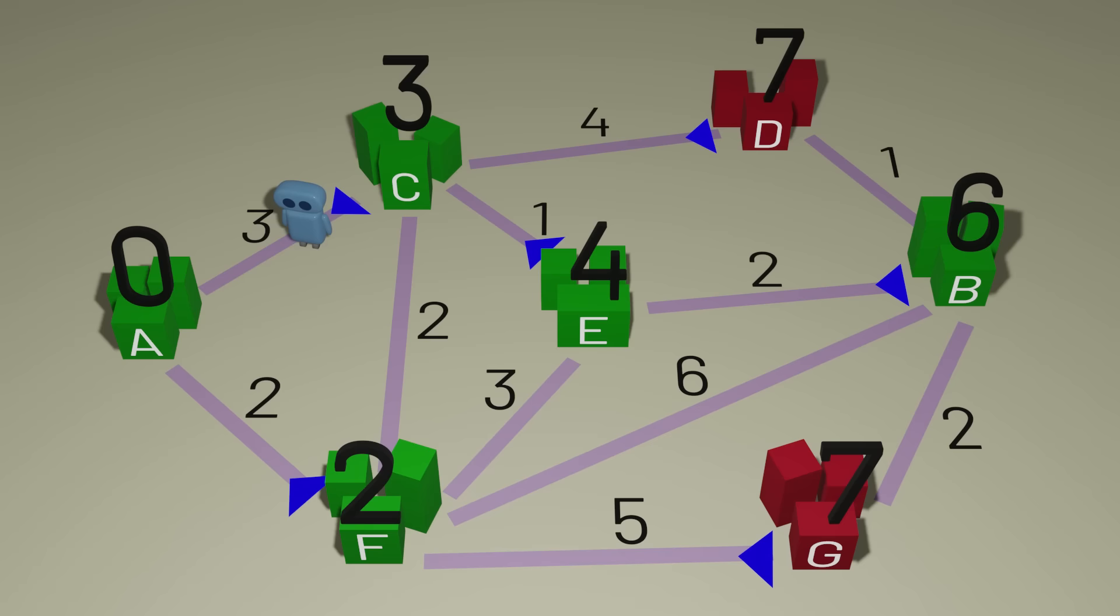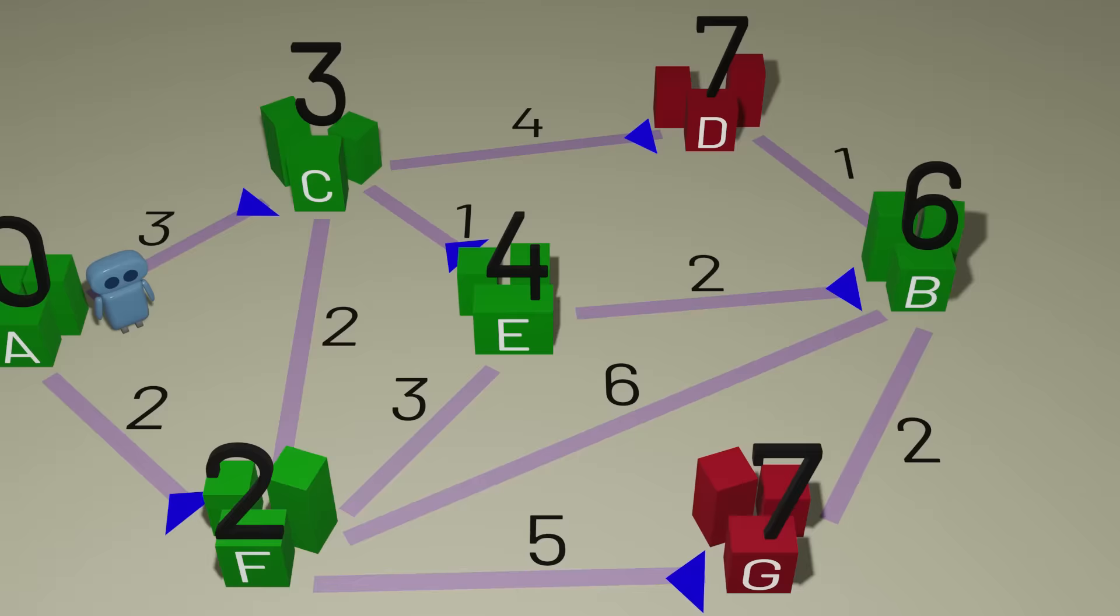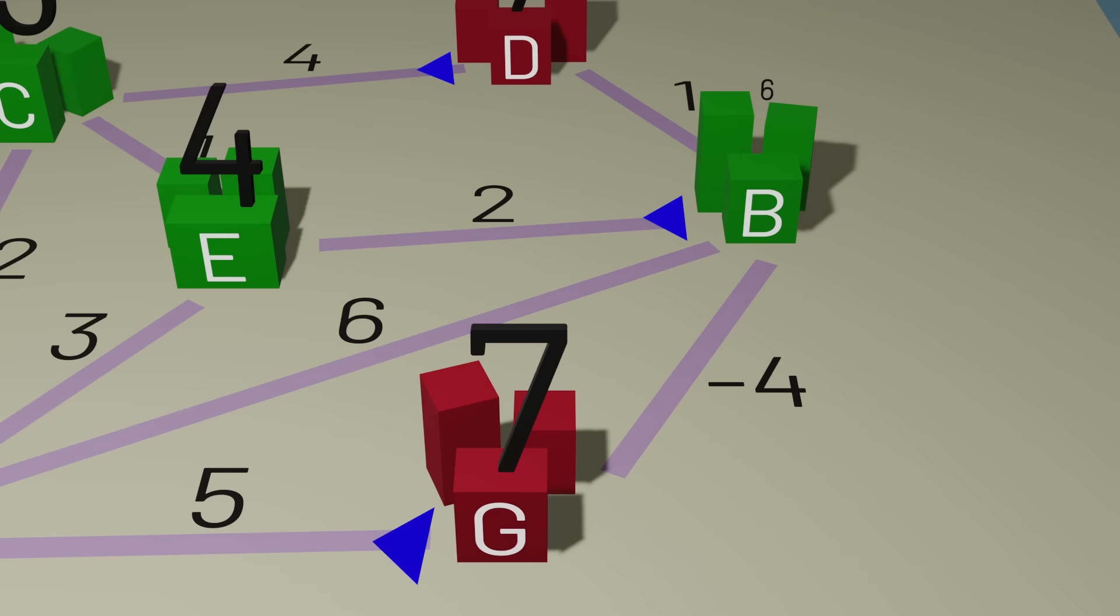Also, it's worth noting that this algorithm only works correctly if the weights of all of the edges are non-negative, since otherwise some negative length path might result in a shortest path that our algorithm wouldn't be able to find.